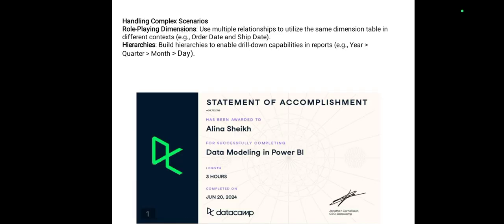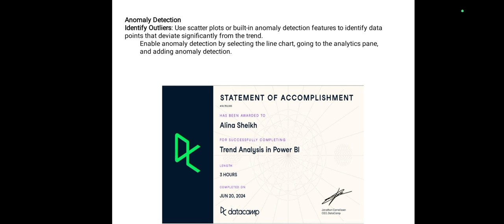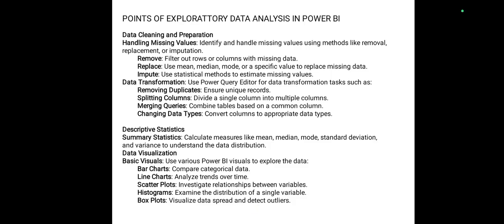Handling complex scenarios includes working with quarters, months, and days. Points of trend analysis in Power BI include data preparation with consistent data formats and date tables. Visualization for trend analysis includes line charts, single line charts, and multiple line charts. Time intelligence functions include DAX functions, forecasting, and anomaly detection.